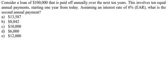paid off annually over the next 10 years. This involves 10 equal annual payments starting one year from today. Assuming an interest rate of 6% Effective Annual Rate (EAR), what is the second annual payment? Now I will show you how to answer this question.